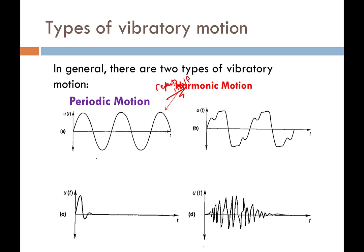Now there's another type of motion. Before I move on — the most basic type of periodic motion is what we call harmonic motion, and that is just a simple cosine or a sine wave of uniform amplitude and uniform frequency. So the most basic of all motions is periodic harmonic motion.